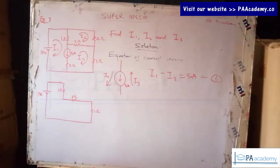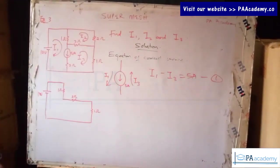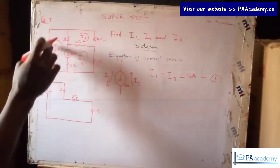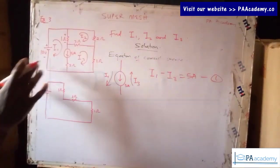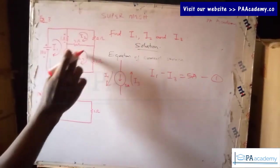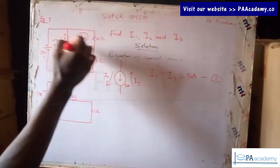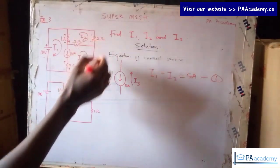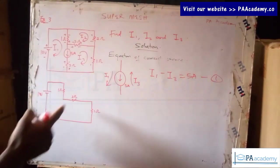We also have a voltage source of 10 volts. Let's go ahead and add the polarities. For the voltage source, this is plus and this is minus. Based on the direction of i1, this is going to be plus-minus. This should be simple by now if you've watched the video on mesh and super mesh. For i3, this will be plus-minus as well.